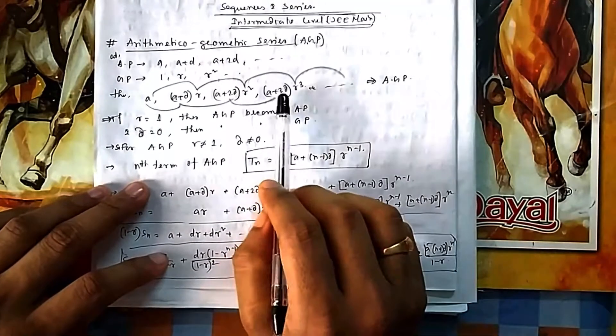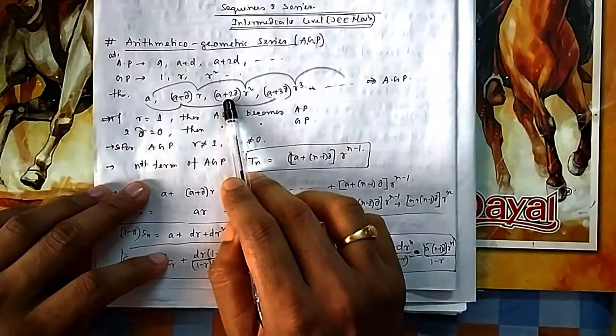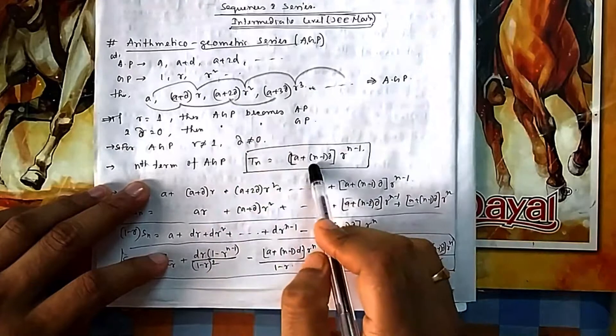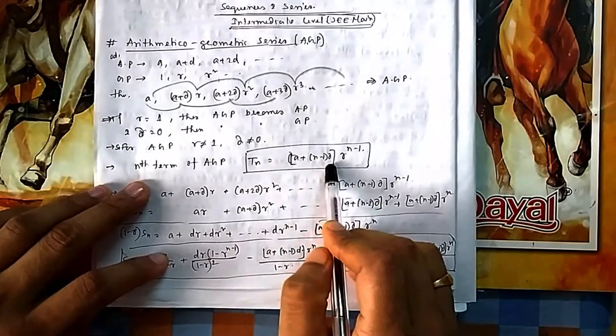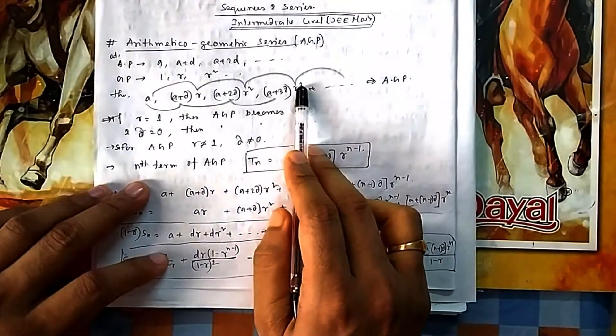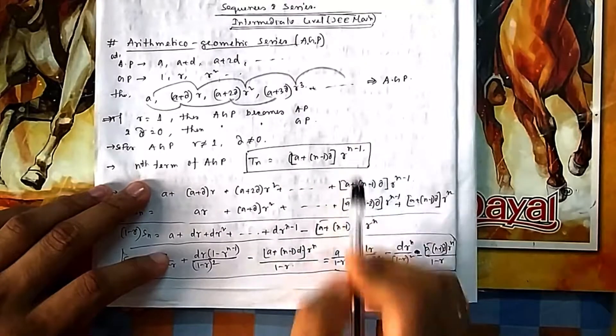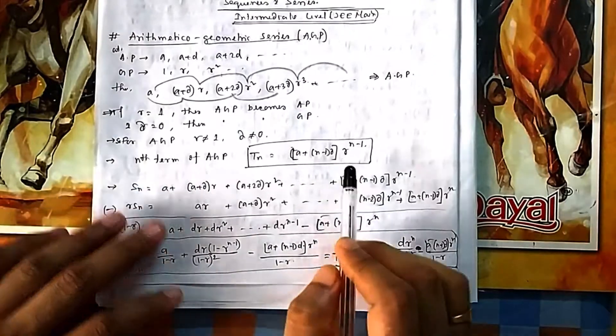The nth term of AGP is a mixture of AP and GP. You can find it as: Tₙ = (a + (n−1)d) · r^(n−1). In the fourth term it is r³, so in the nth term it will be r^(n−1).